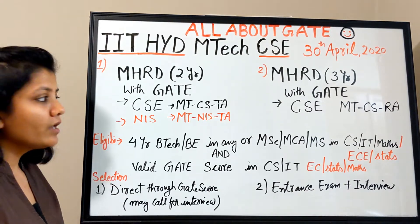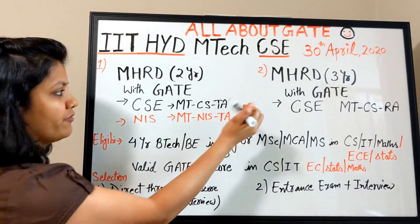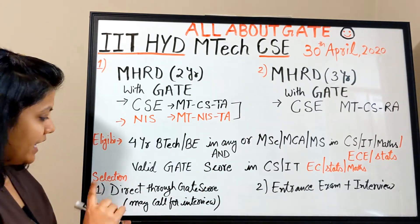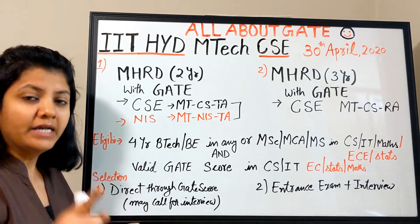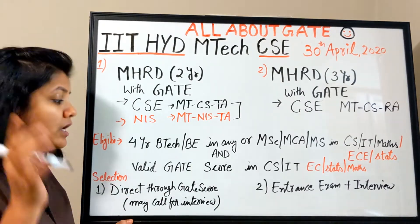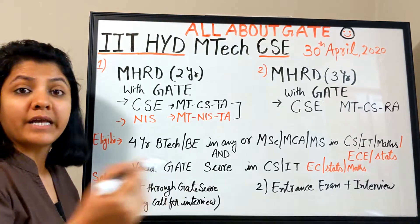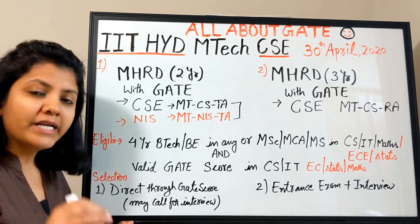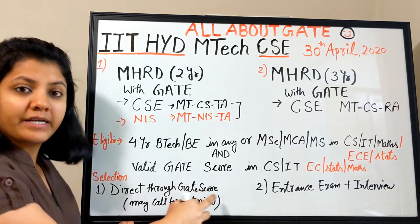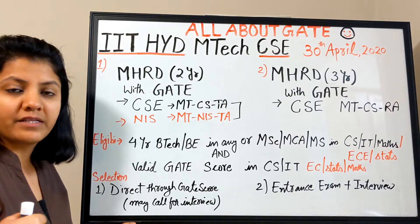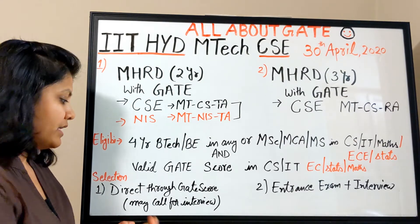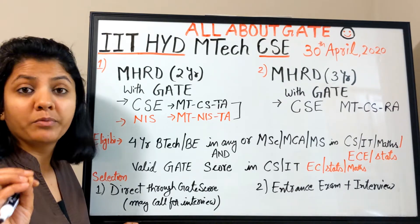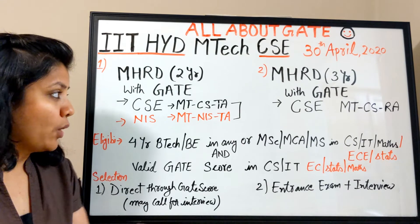For the TA category — both CSE and NIS — admission is direct through the GATE score. However, they have mentioned that they may call for an interview, so it's not certain whether an interview will happen or not. Generally it is based directly on GATE score with the highest scorers getting a chance, but be prepared for an interview as well.